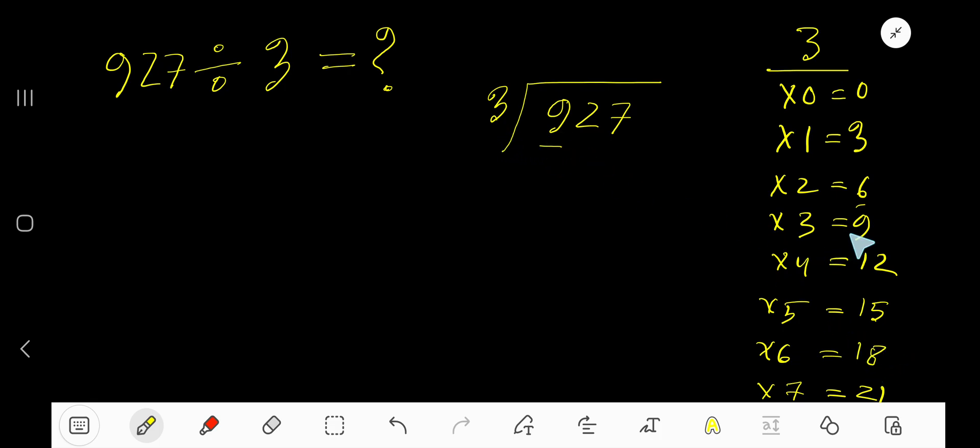3 goes into 9 how many times? 3 times. 3 times 3 is 9. Subtract to get 0. Bring down the next digit.